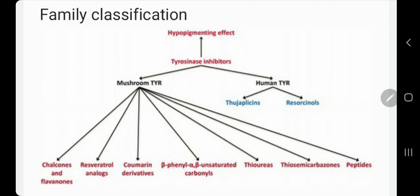I'd like to go through the family classification of these compounds so we can avoid them. They use either human tyrosinase inhibition evidence or models for research like mushroom tyrosinase. In the lab, we use mushroom tyrosinase, bacterial tyrosinase, or other species' tyrosinase, and these families are classified under different names.